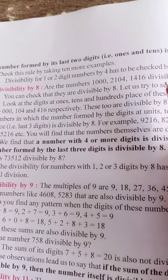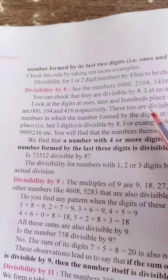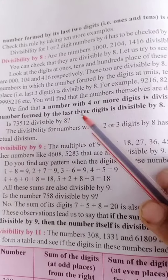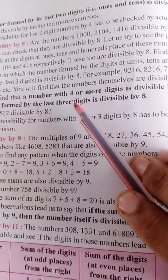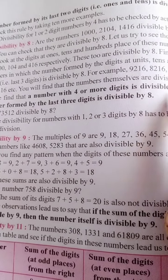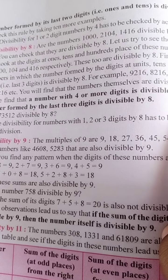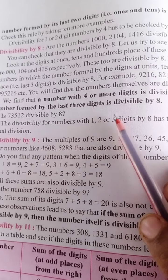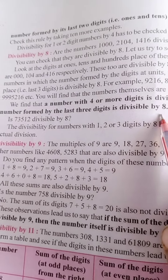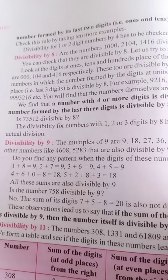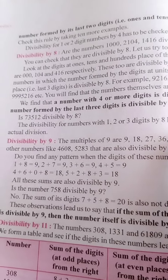Divisibility by 8: a number with 4 or more digits is divisible by 8 if the number formed by its last 3 digits is divisible by 8.